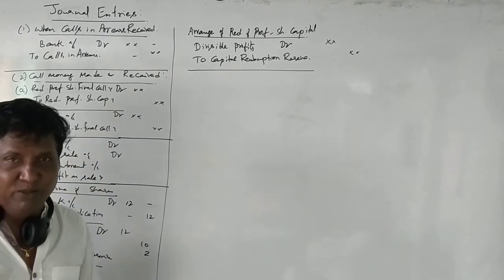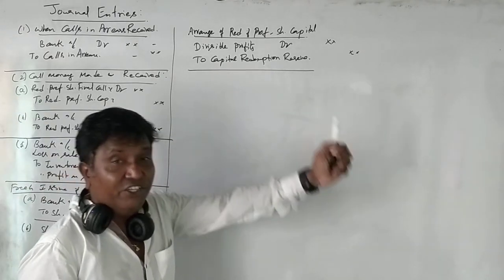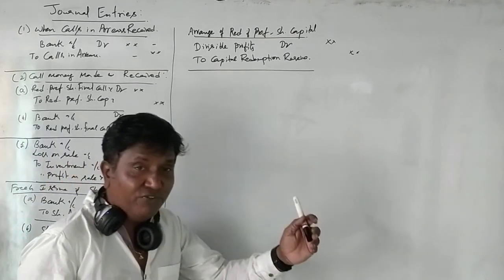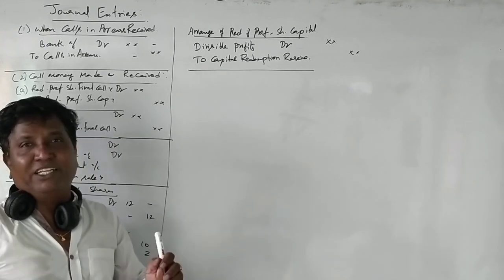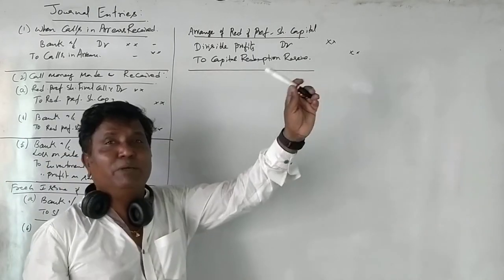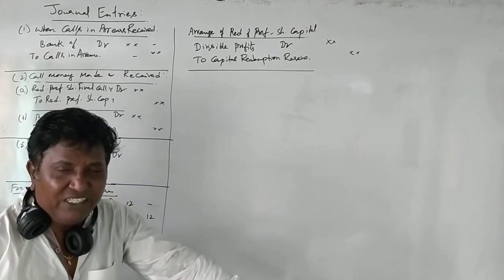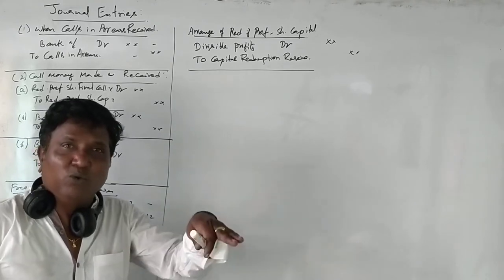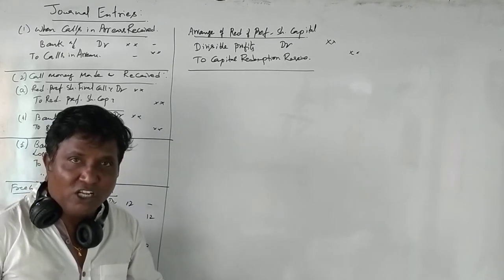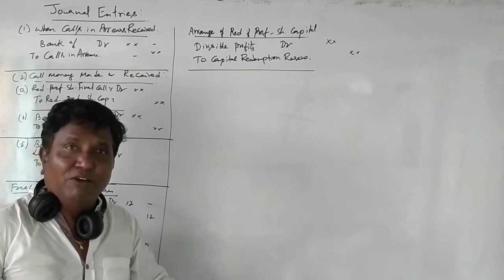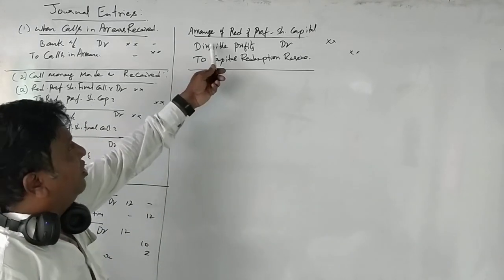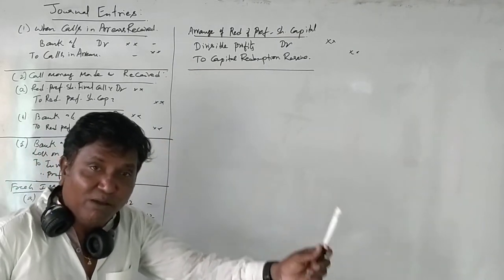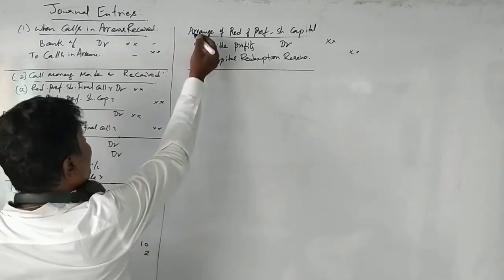This is a very important entry which we have to pass in all problems, because when you want to pay for the capital portion of preferential capital, we must arrange from the profits earned by the company. So all divisible profits — for example, 5 lakh rupees as general reserve, 2 lakh rupees as profit and loss account, 1 lakh rupees as dividend equalization reserve — are debited, and credited to capital redemption reserve.